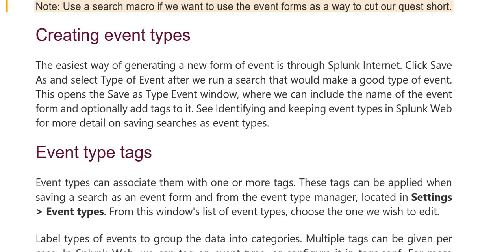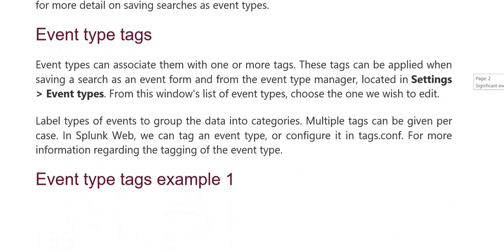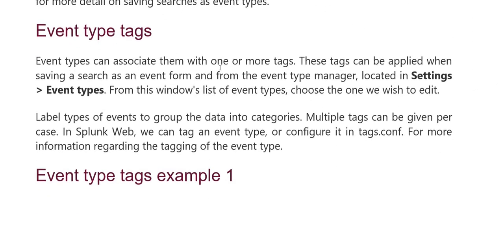This opens the 'Save As Event Type' window, which includes the name of the event type and optionally you can add a tag to identify it. To keep event types in Splunk web, or for more details on saving event types, tags are associated with one or more event types. These tags are applied when you save a search as an event type. The event type manager is located in Settings > Event Types window, where you can see a list of event types and choose one you wish to edit.